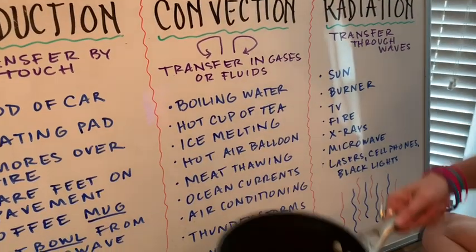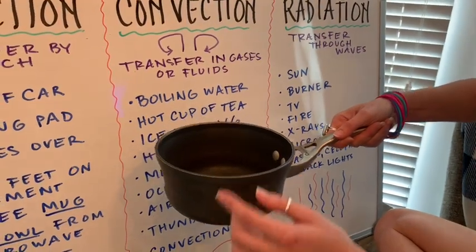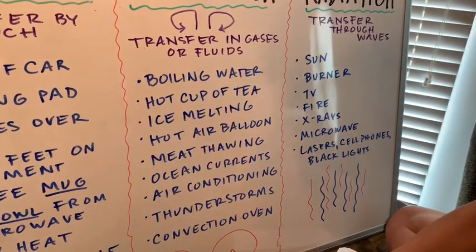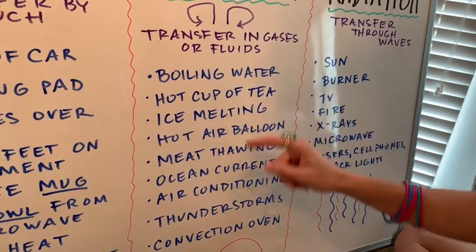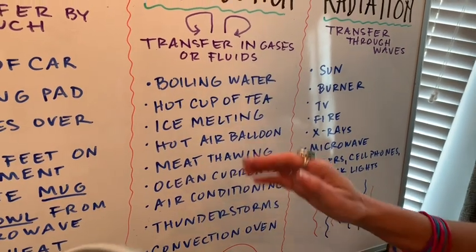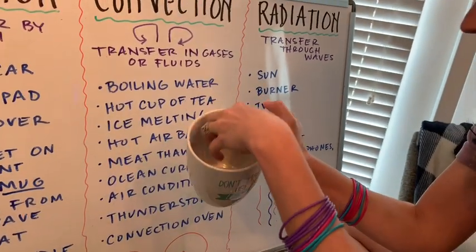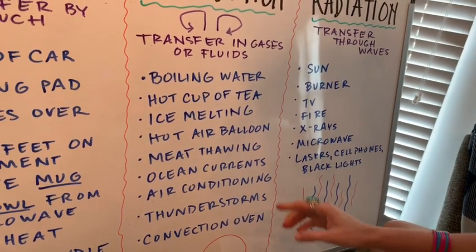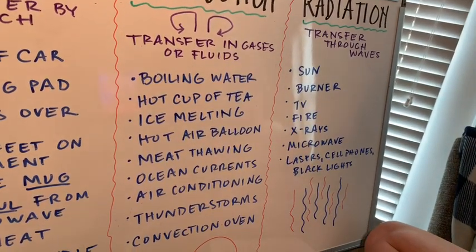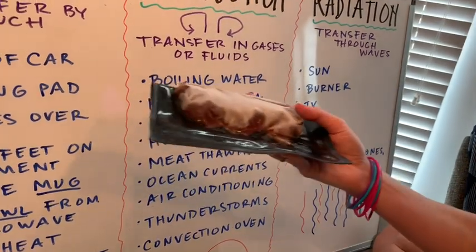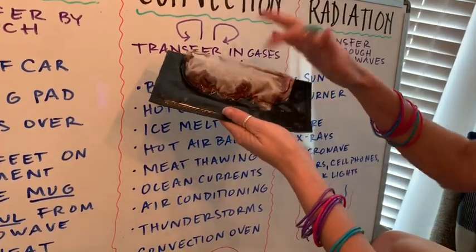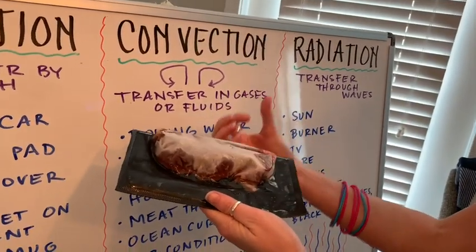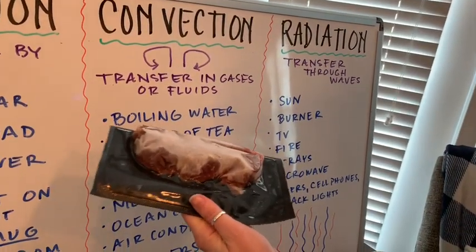Let's move on to convection. This is anything transferring through gases or fluids. Boiling water inside a pot is convection currents — remember we learned about these inside the mantle. Think of a hot cup of tea — not the mug itself, but the liquid inside boiling. Ice melting is another example, as is meat thawing, because as the meat thaws the heat is transferring.